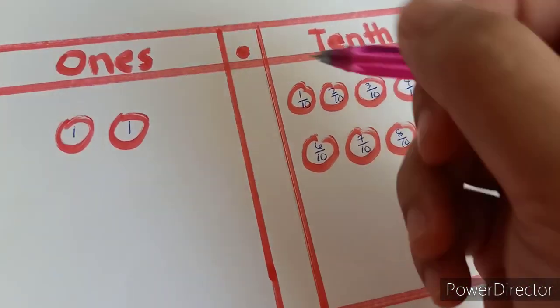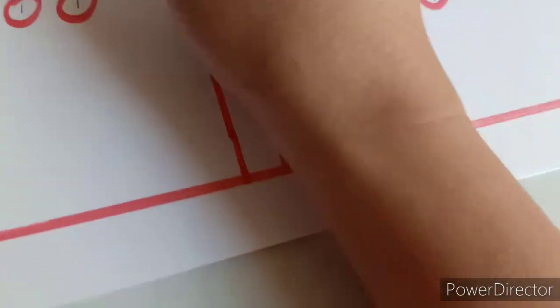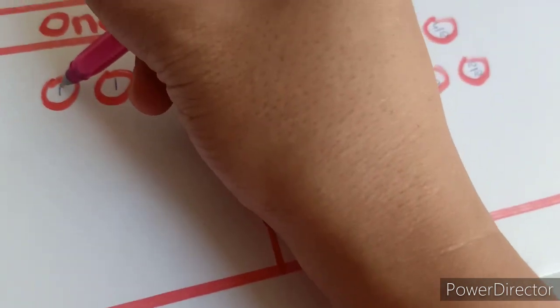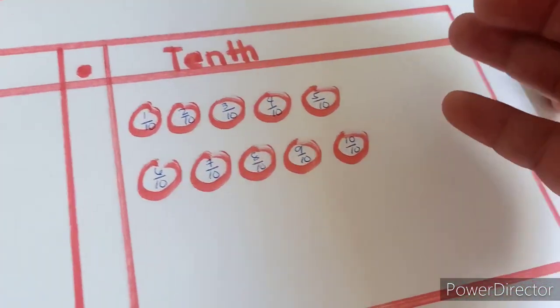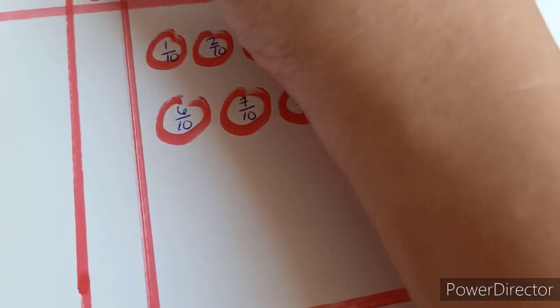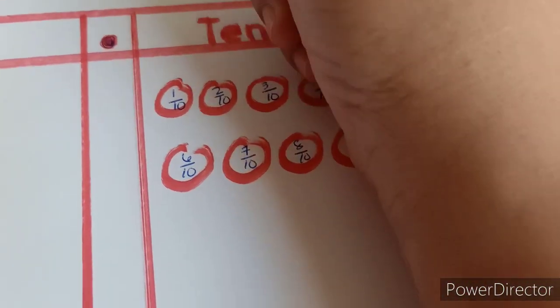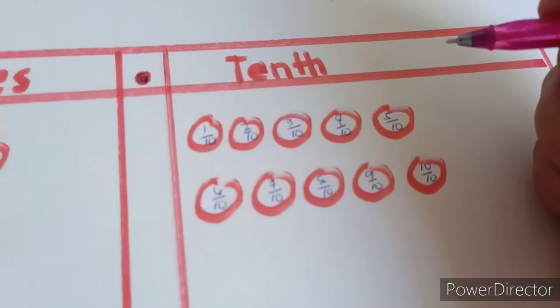Alright, now we have the 2 ones. We will have to label it. 1, 2, and this part, this dot is what we call the decimal point.